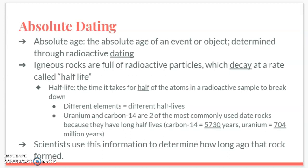Our last topic is absolute dating. Absolute age is determined through radioactive dating. When we use the fossil record and index fossils to estimate age, that's relative dating — we know about when those organisms existed. But with absolute dating, we can use radioactive dating to figure out the exact age of a fossil or rock layer.